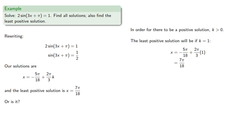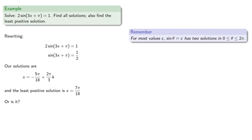Or is it? And the thing to remember is that for most values c, sine of theta equals c has two solutions in the interval between 0 and 2pi. So again, if we want sine of blank to equal 1/2, we could also have blank equal to 5pi over 6.